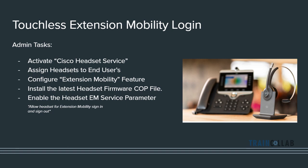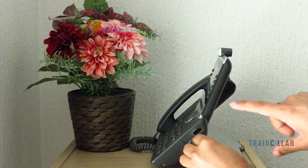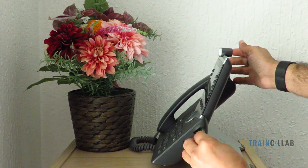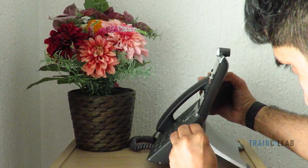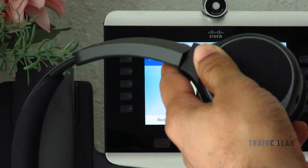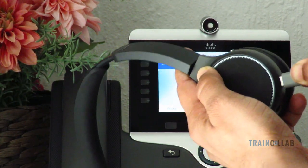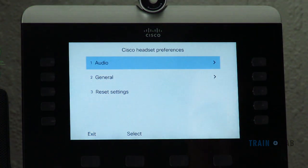Now let's look at the demo and see how touchless extension mobility login works. Before we start, let me show you the connections. On the right side there is a USB port on the Cisco 8865 phone where you connect the USB cable from the headset, and the other end connects to the USB-C port on the headset.